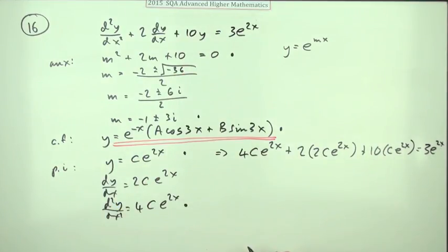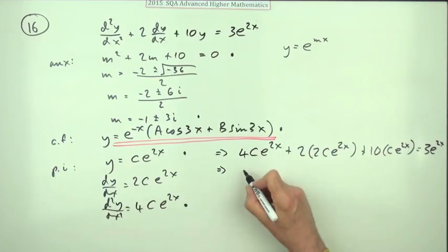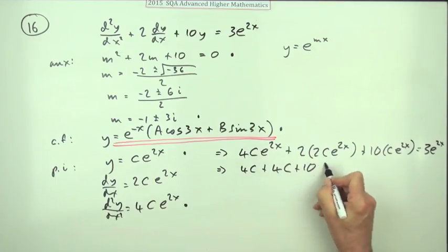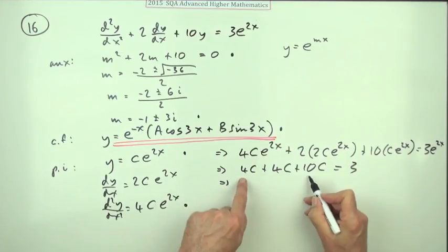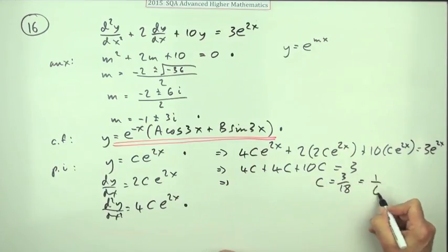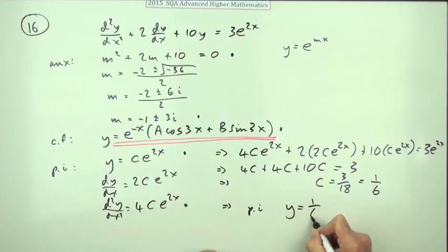Now e to the 2x is common to everything here and e to the anything can never be zero, so you can just divide that straight out. We're left with 4c plus 2c plus 10c equals 3, so that's 16c equals 3. So c equals 3 over 18, which means that cancels down to 1/6. So then I've got my particular integral is y equals 1/6 of e to the 2x.